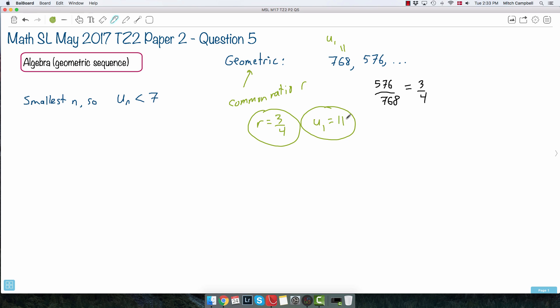And then it helps to find out, then, what's the nth term? What is the generic nth term of a geometric sequence? And you can look that up. You don't have to memorize, you look it up. You can look it up under topic 1, so under algebra. You look up the nth term of a geometric sequence, and it goes like this. It goes, un equals u1, the first term, times r to the power of n minus 1. This equation is given.